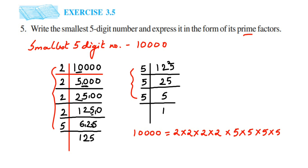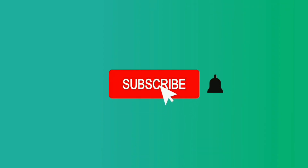Taking all the prime numbers we collected, 10,000 = 2 × 2 × 2 × 2 × 5 × 5 × 5 × 5. We got four 2s and four 5s. This is how we can express 10,000 in terms of prime factors. I hope this question is clear — if you have any other question or doubt, you can drop a comment. Thank you so much for watching!